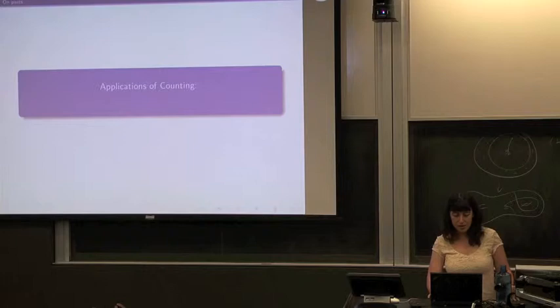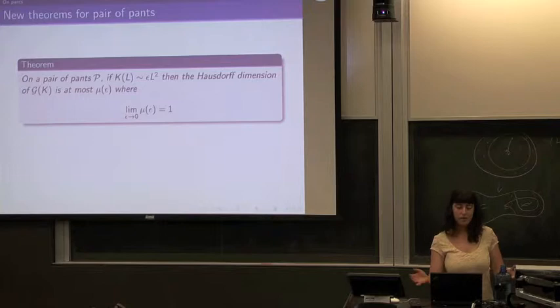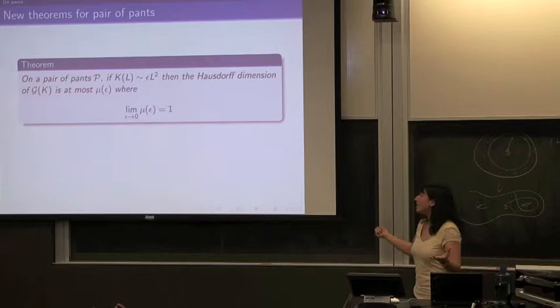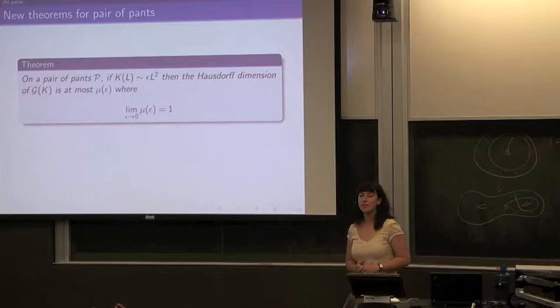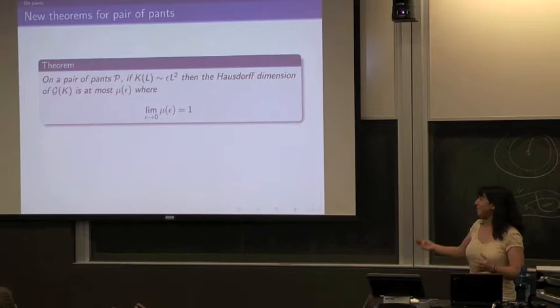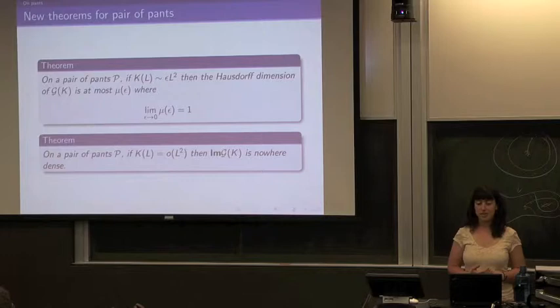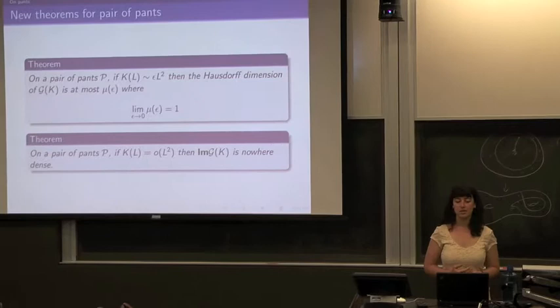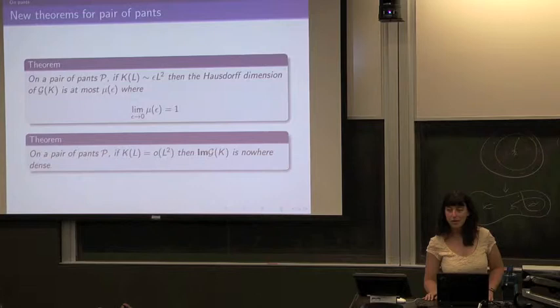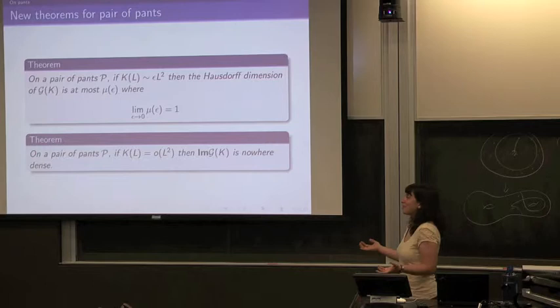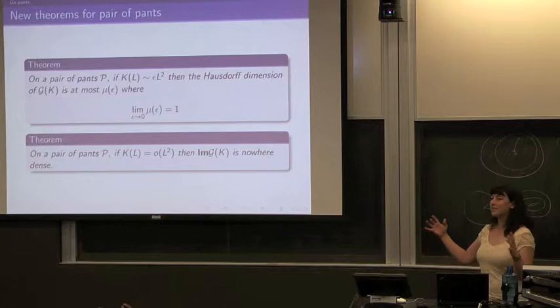Here's the result you can get on a pair of pants. If you're on a pair of pants and your self-intersection rate is ε·L², then there's some function μ(ε) that goes to one as ε goes to zero, where the Hausdorff dimension of the image of G(K) is μ(ε). The other thing is that if your intersection rate is little-o of L², then you're nowhere dense — the image of G(K) is nowhere dense. The surprising thing is that even constant multiples of L² matter: as the constant gets very small, your Hausdorff dimension also decreases.